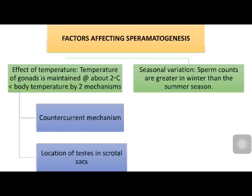Now let us see what are the factors affecting spermatogenesis, which is separate from the regulation of spermatogenesis. The factors affecting spermatogenesis are mainly temperature and seasonal variation. Generally, a temperature of about two degrees Celsius less than core body temperature is required for normal spermatogenesis, which is maintained by two mechanisms: number one, the countercurrent mechanism operating between the testicular artery and pampiniform plexus.